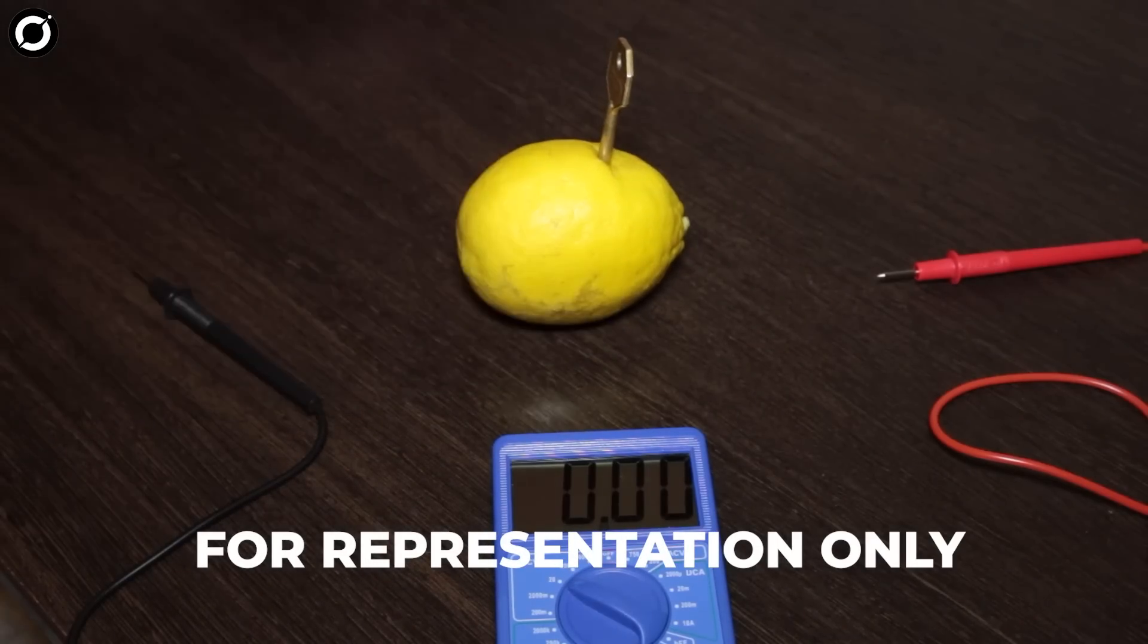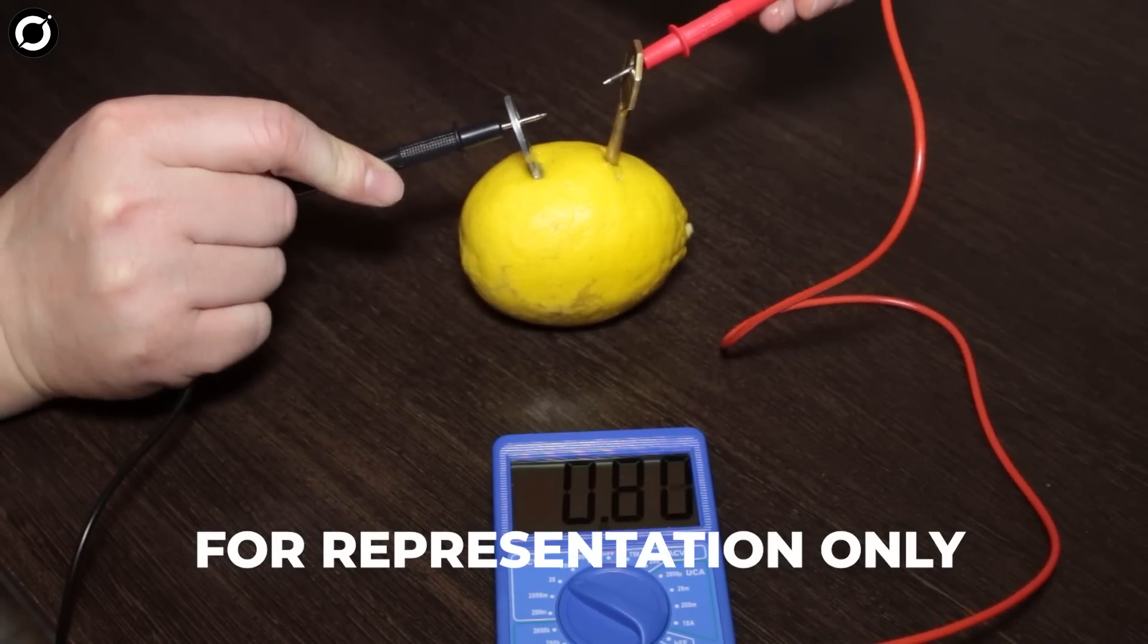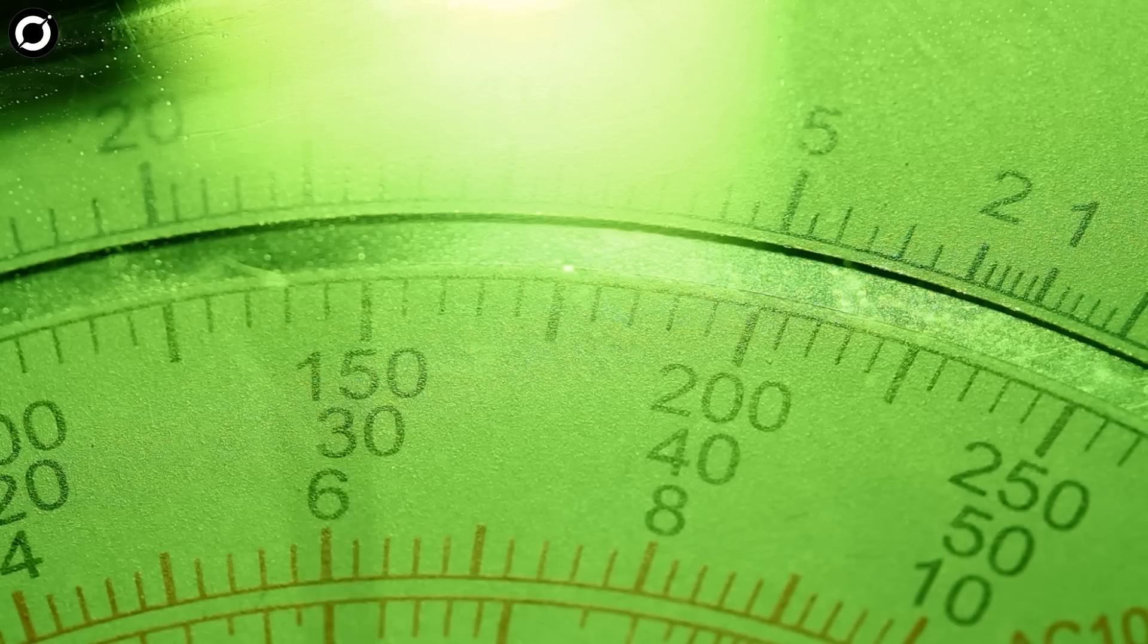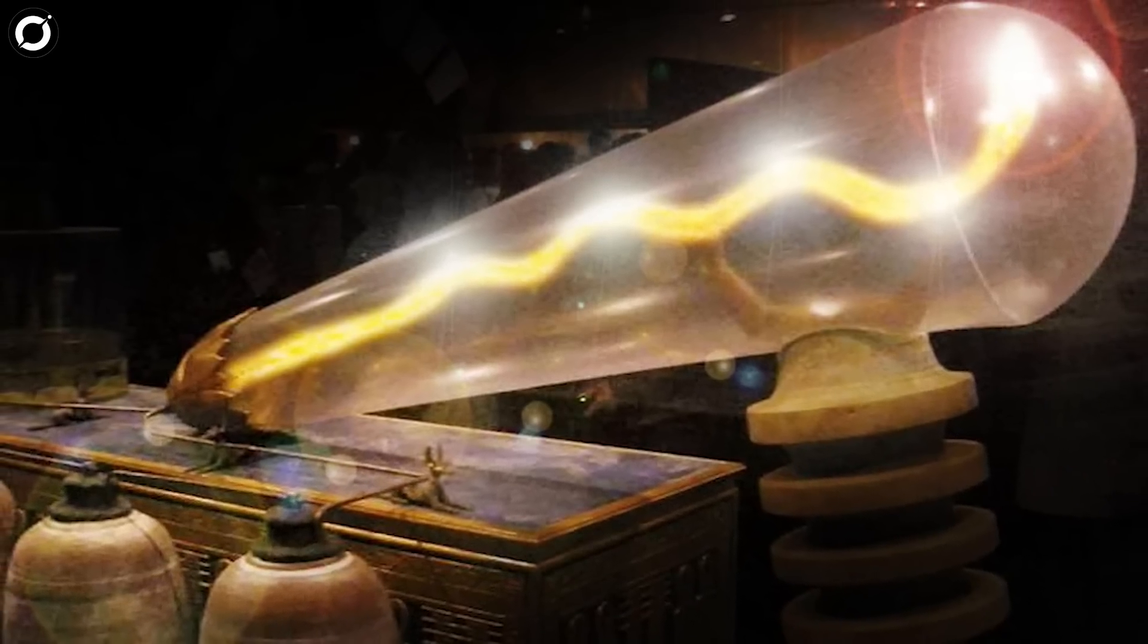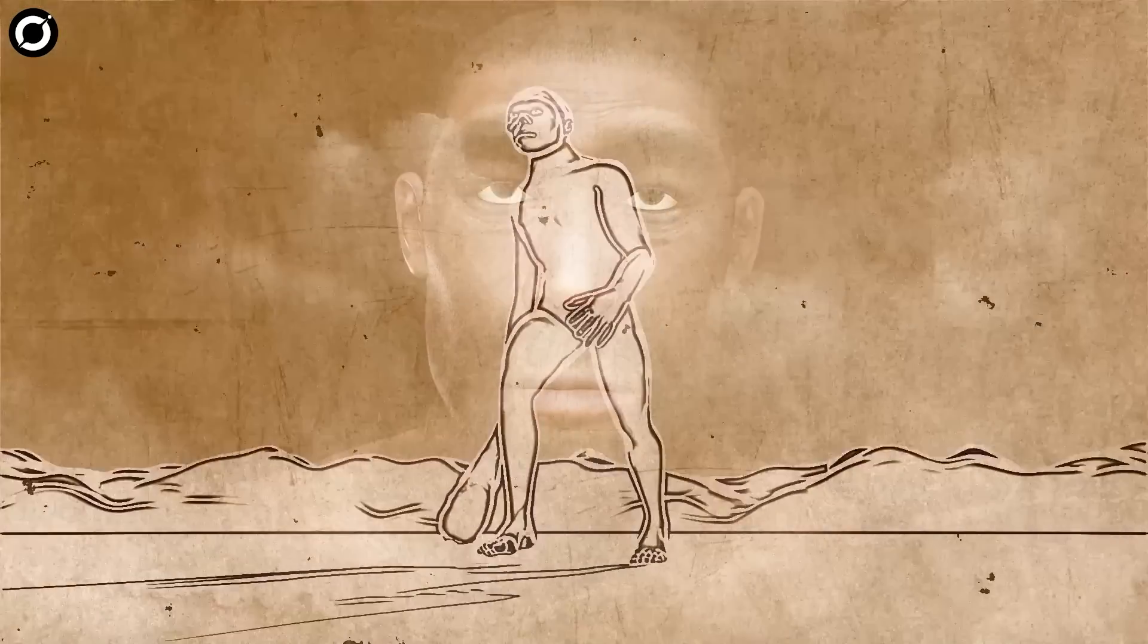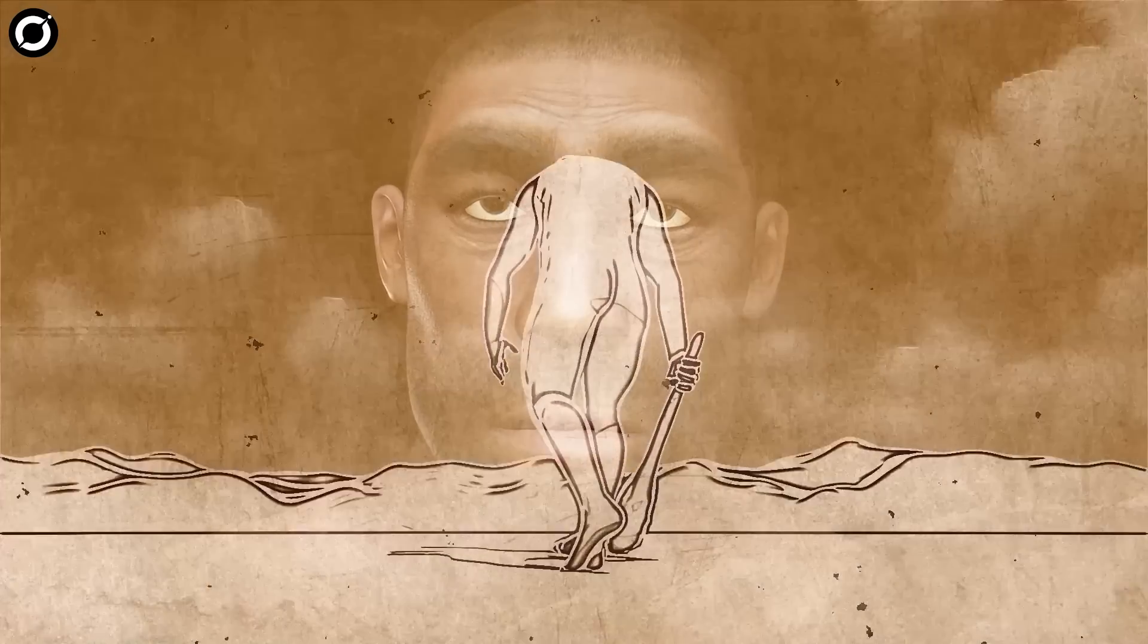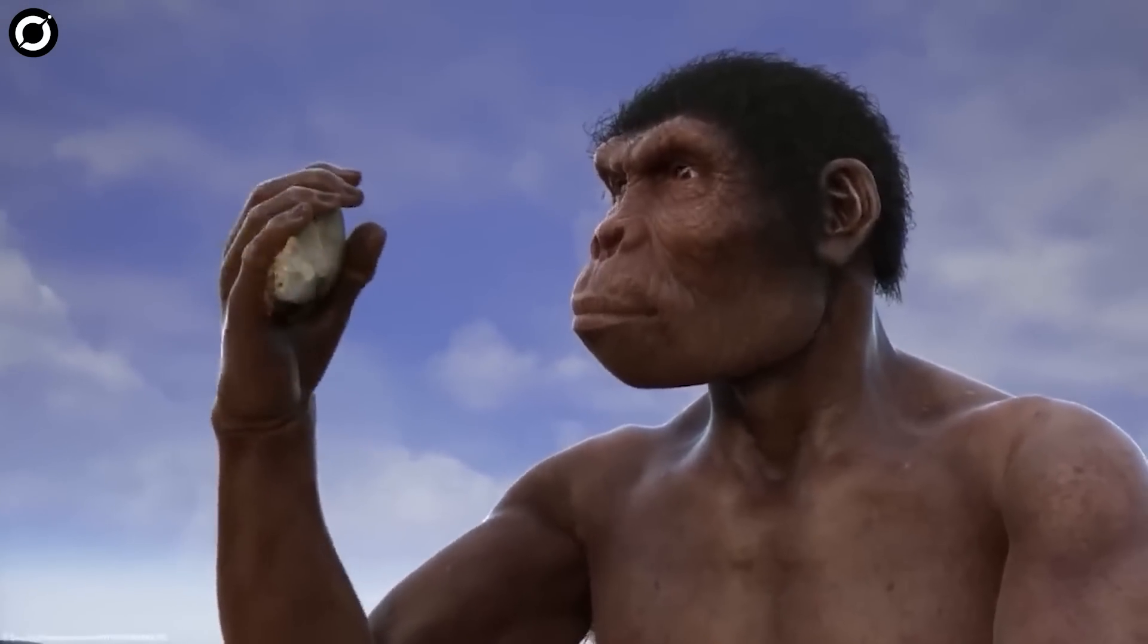Later, researchers tested the batteries with grape juice and lemon juice as electrolytes to activate the electrochemical reaction between the iron and the copper. They discovered that the battery did produce a weak voltage. When hooked up in series, the devices produced an increased voltage. How humans 100,000 years ago would have been able to be technologically advanced to such a degree as to be able to create them is unknown.